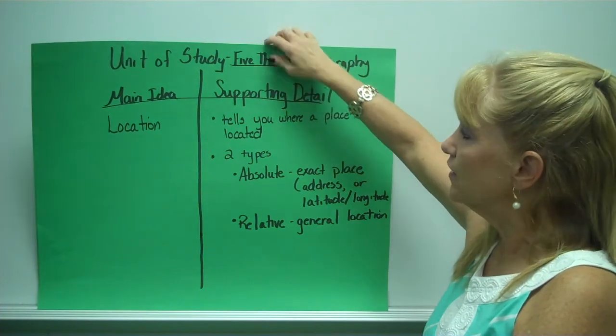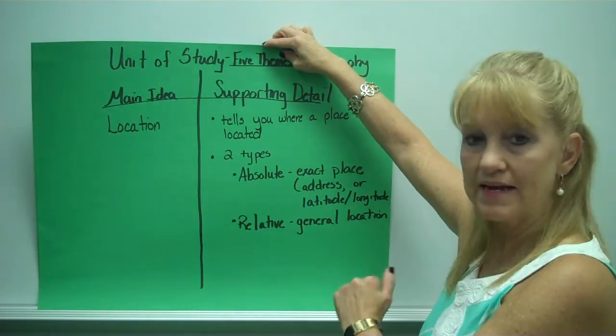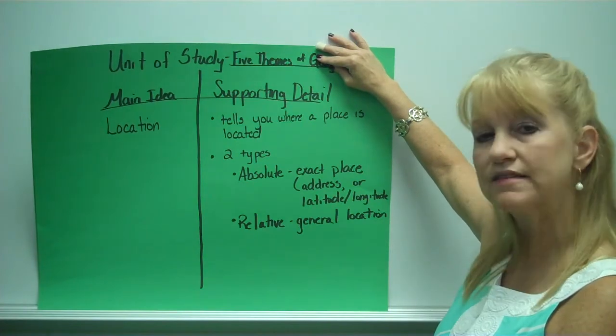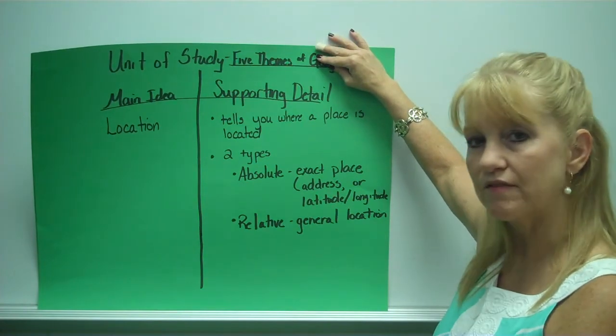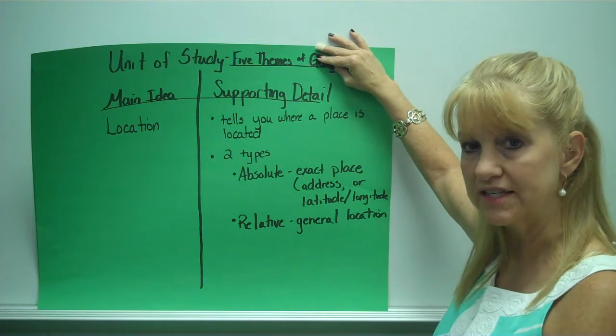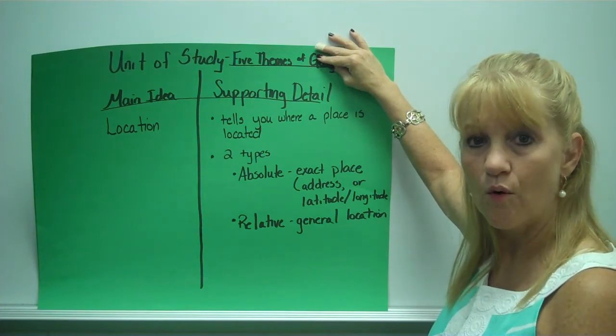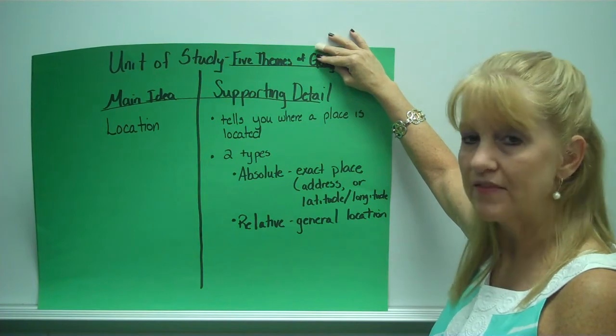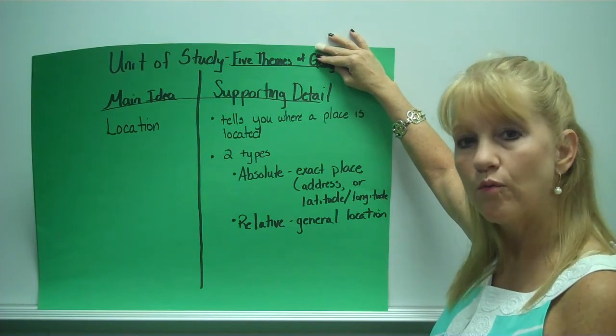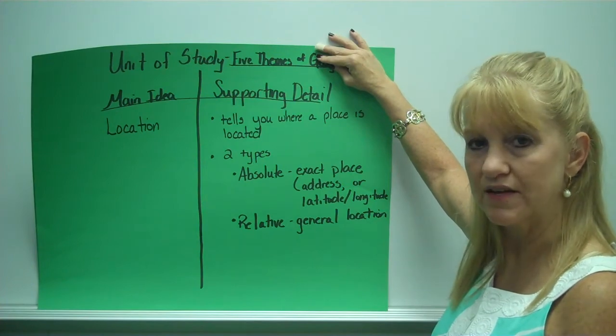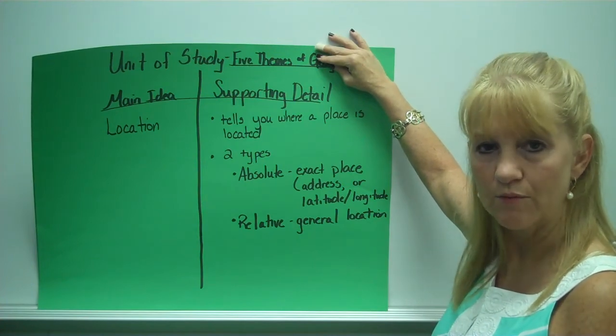Here's an example. Location is the main idea. Supporting details tells you where a place is located. There are two types of location. Absolute, which is the exact location, which gives you address or latitude and longitude lines. Or relative location is the second one, and it's a general location of where something is, like north of Durant Road Middle School.